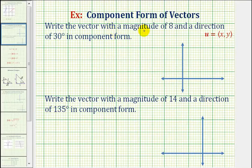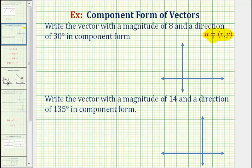We want to write the vector with a magnitude of eight and a direction of 30 degrees in component form. This is the component form of a vector when the initial point is at the origin and the terminal point is at the point x comma y, where x is the horizontal component of the vector and y is the vertical component of the vector.